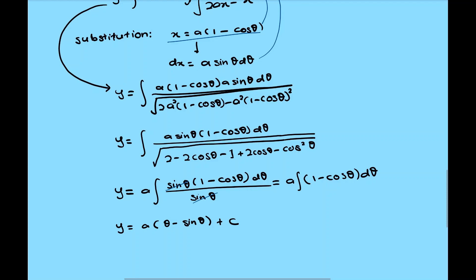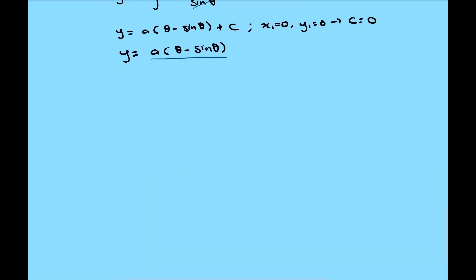To solve for constant c, we substitute the condition at the origin and we find out that c is just 0. Finally, we have the term for y, y is equal to a theta minus sin theta. And combined with the term x earlier, x is equal to a times 1 minus cos theta. And these equations are just basically referring to a cycloid where a is the value at point B.